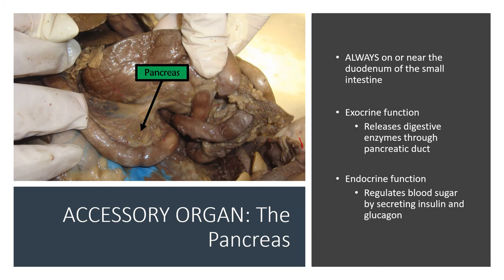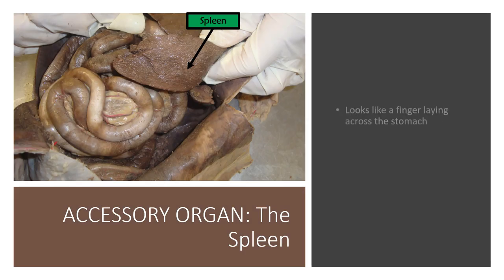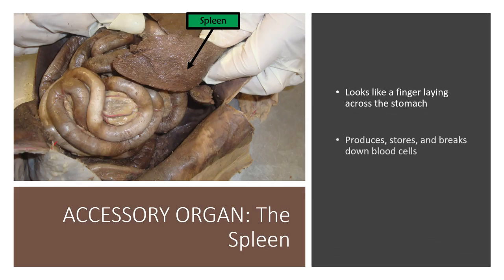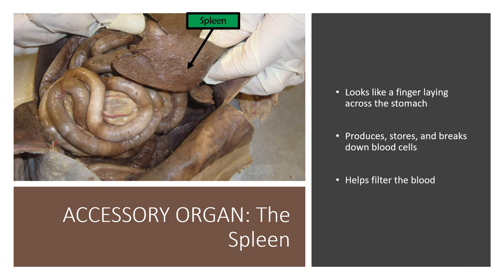To clarify: glucagon actually increases blood sugar, while insulin decreases blood sugar. The spleen looks like a finger laying across the stomach — this is where blood cells are produced, stored, and broken down, and because of that the spleen also helps filter blood. That covers the digestive system of the cat and mammals in general.